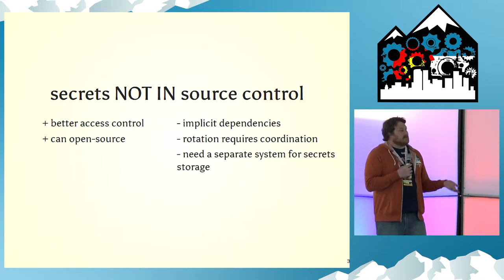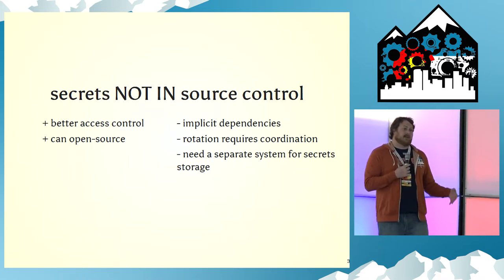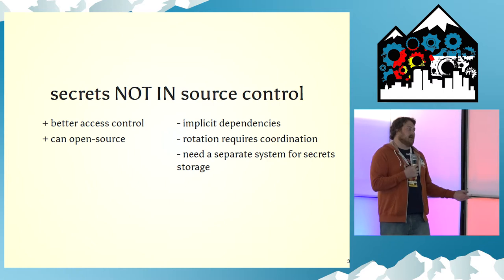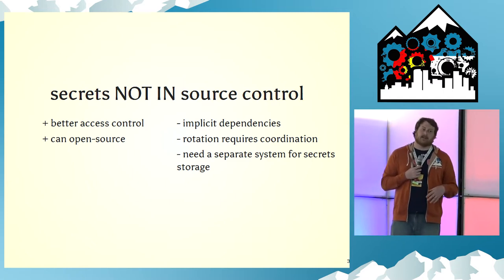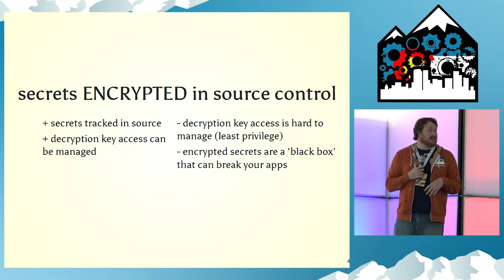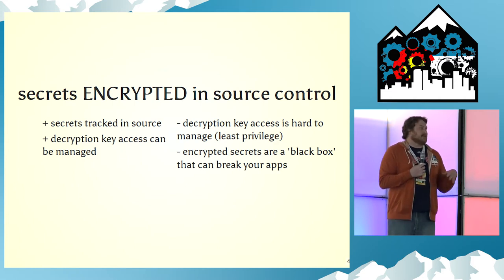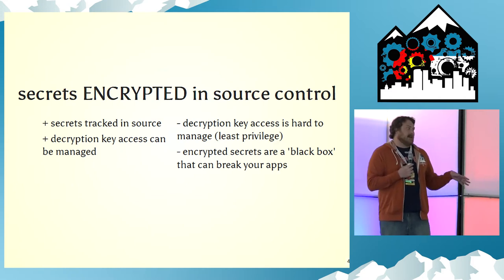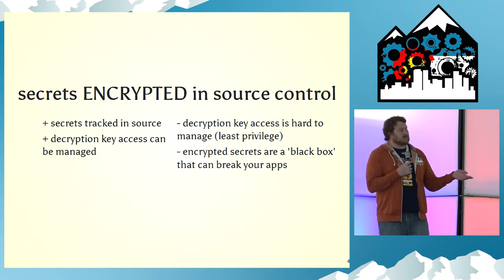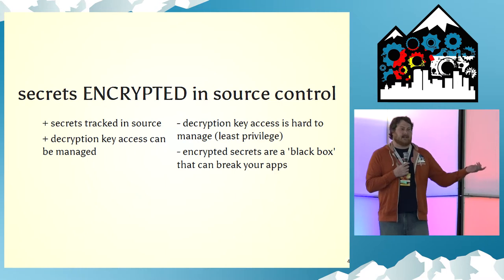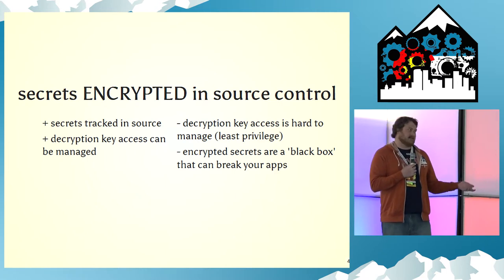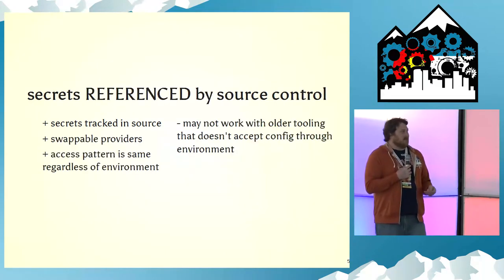The second pattern is secrets not in source control — you remove them and put them somewhere else. For example, you lay down secrets with your config management and your application expects them to be there. That's okay, but then you have implicit dependencies. The third pattern is secrets encrypted in source control, which I see as just kicking the problem down the line because now you've created decryption keys, which are also secrets.